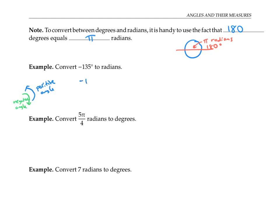To convert negative 135 degrees to radians, I could multiply by pi radians per 180 degrees. Notice that the degrees cancel here, and I end up with negative 135 pi over 180 radians. That simplifies to negative three pi over four radians.